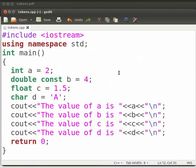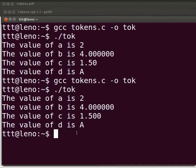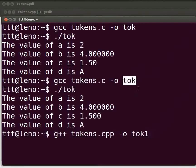Let us execute the program. Come back to our terminal. To compile type: g++ tokens.cpp -o tok1. Here we have tok1 because we don't want to overwrite the output parameter tok for the file tokens.c. Now press enter.